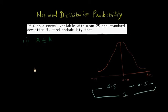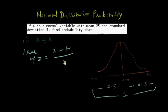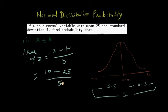Now first of all we calculate the Z value. The formula is Z equals X minus mean divided by standard deviation. Z is the standard normal distribution and we are calculating its area. Here X is 10, mean is 25, and standard deviation is 5. So Z equals (10 minus 25) divided by 5, which gives minus 3.